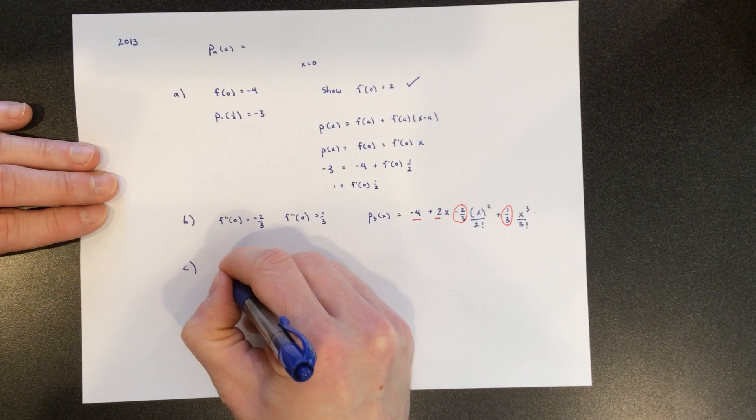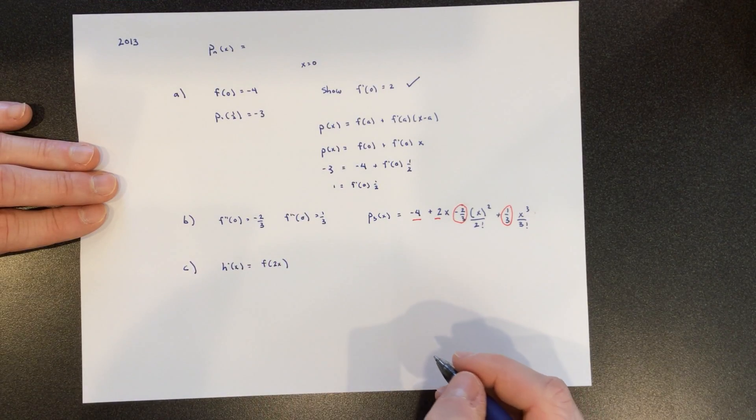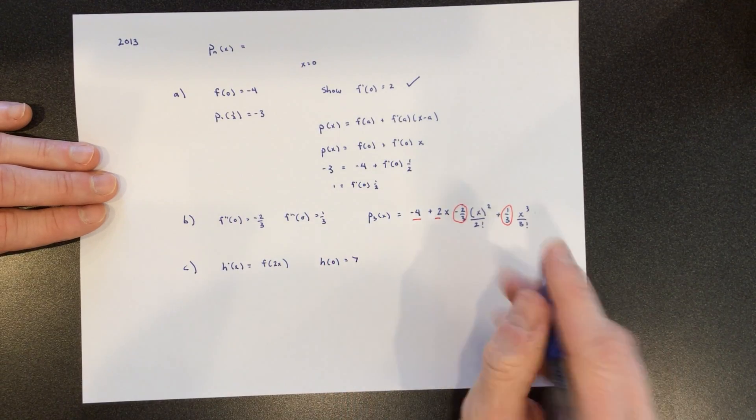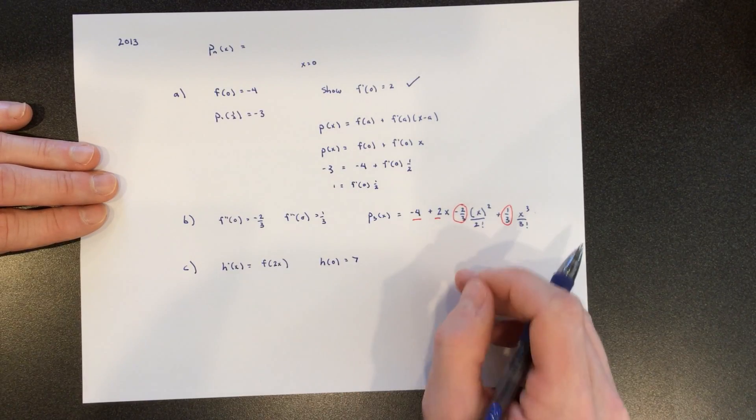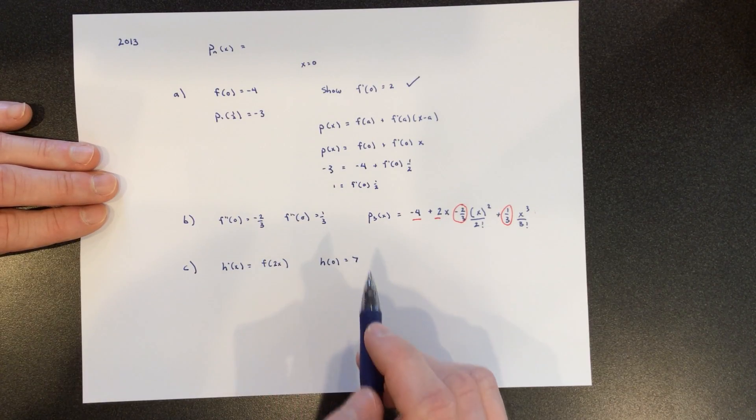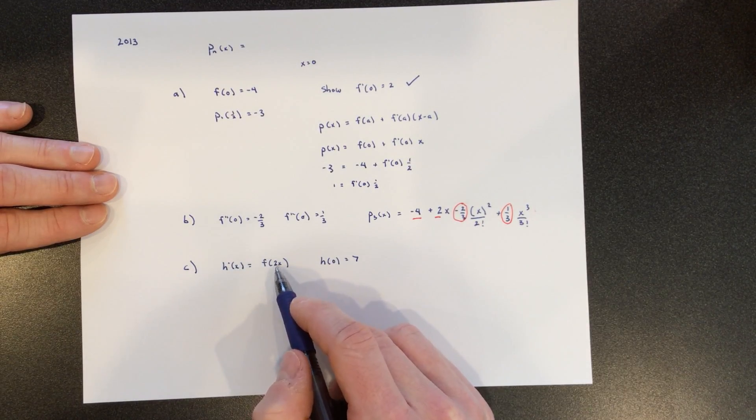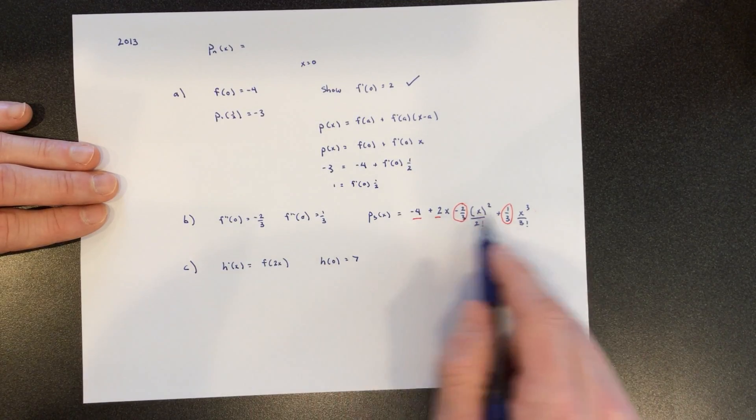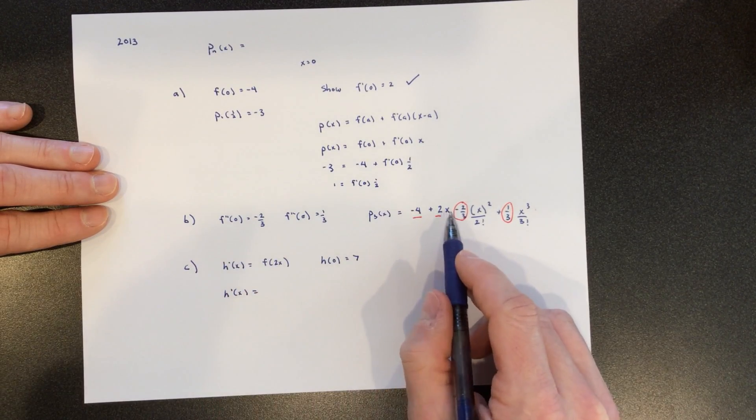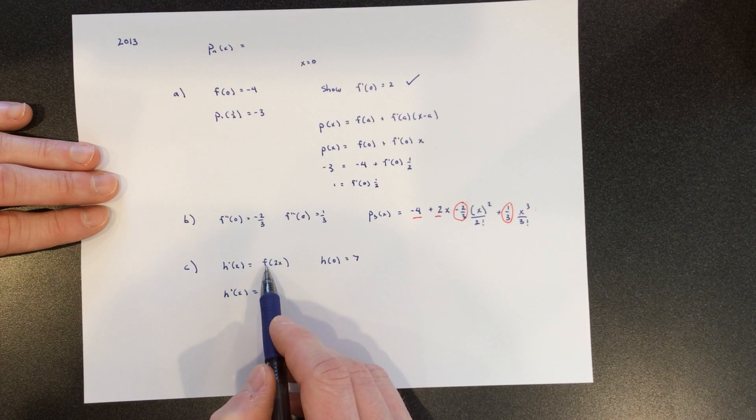Part C says this. It tells you that H prime is equal to F of 2x. And it also tells you that H of 0 is 7, and it wants you to find the third degree polynomial for H. There's a couple ways to do this. I think the easiest way is the fact that if you know F of x is approximation, and you know that H prime is just plugging in 2x into x, I would just start here. And so then H prime is me just plugging in 2x into all of these guys. And that's what this says. H prime is equal to F of 2x.